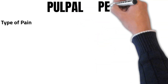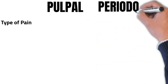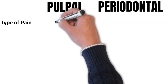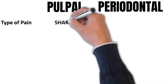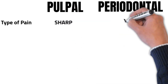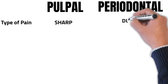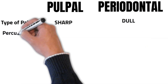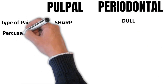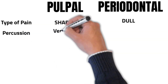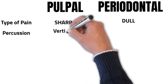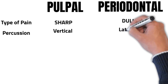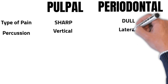The type of pain is usually quite sharp and severe in pulpal pain, whereas in periodontal pain it's usually quite dull and aching. The tooth is tender on vertical percussion with pulpal pathology, whereas with periodontal pathology it's usually tender on lateral percussion.